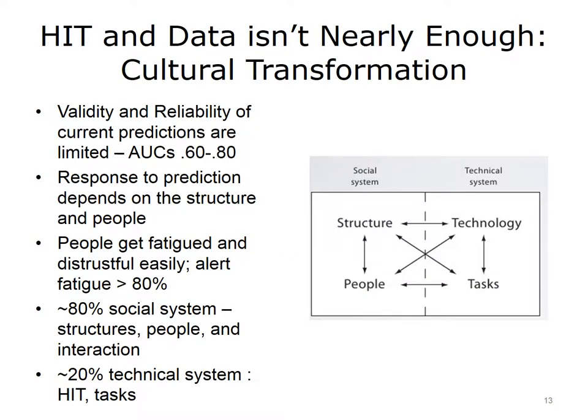Although data issues are important, the way in which we take up data and use it in society and in our organizations depends largely on cultural issues. We have a saying in informatics that only 20% of the issues are technical — the HIT-specific tasks — and 80% are social: the norms, the structures, the people, and their interaction. Our ability to process and use information is limited, and the prediction rules are never perfect. Dealing with this uncertainty is difficult. The validity and reliability of the predictions for something like readmission is only accurate a fraction of the time, and response depends in large part on how much people trust the data, their current attention, their sense of what to do and how to do it, and what other people think. Currently, any alerting from the EHR has significant fatigue associated with it, meaning people ignore the alerts they receive from EHRs upwards of 80% of the time.